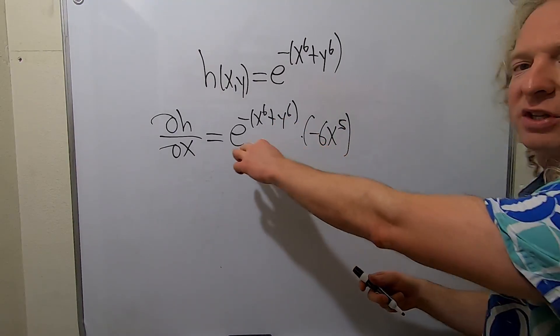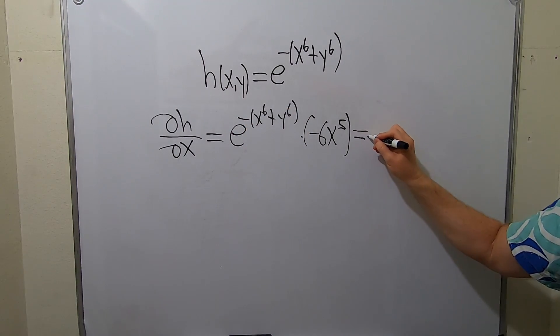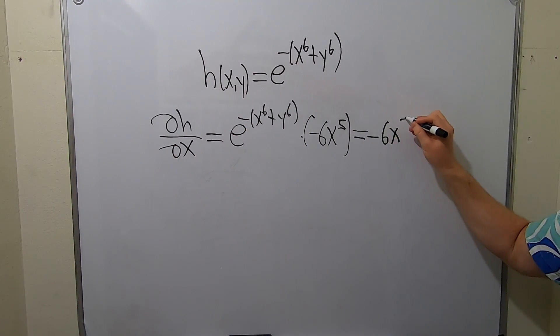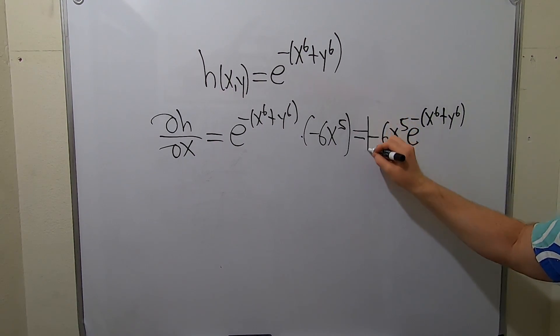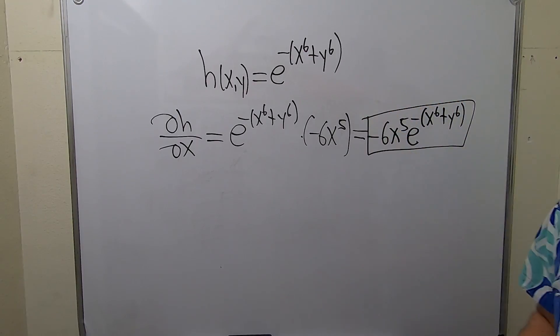To finish, maybe we can put this in the front. This will be -6x^5 times e^(-x^6 + y^6). And that would be the beautiful final answer. What a nice answer.